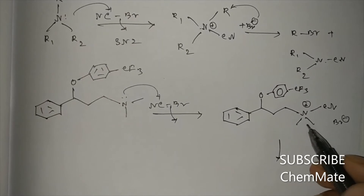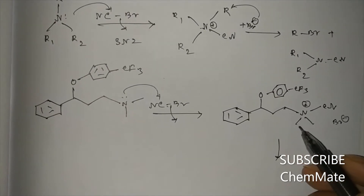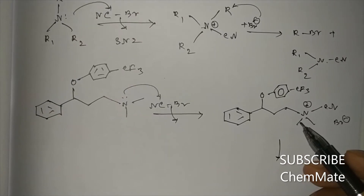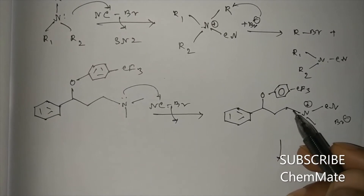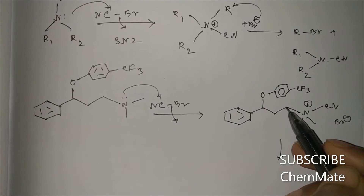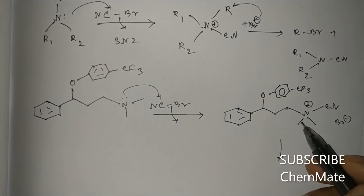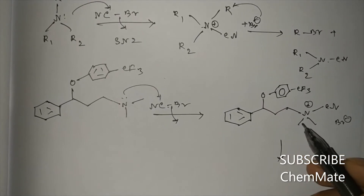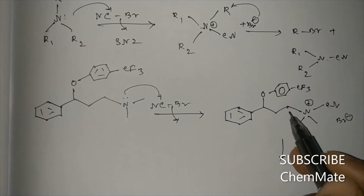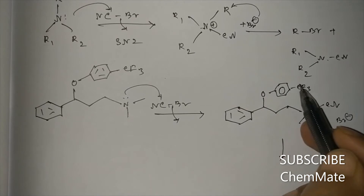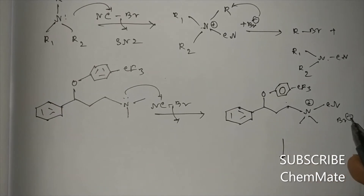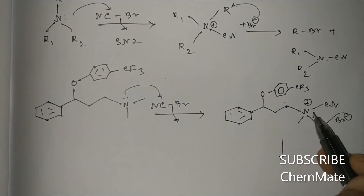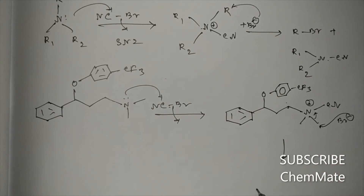The CF3 group is a strong electron-withdrawing group, so Br minus may attack between the two methyl groups or at the carbon bearing CF3. We need to see where the transition state — that is, the carbocation — will be more stable. If the positive charge is generated on the carbon adjacent to the CF3 group, that will be less stable. So Br minus will preferentially attack into one of the methyl groups.